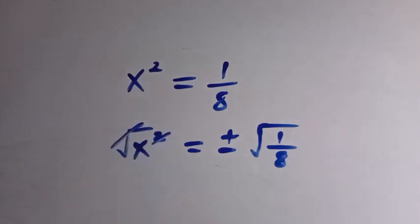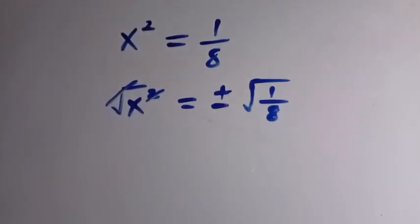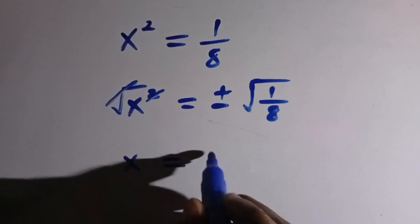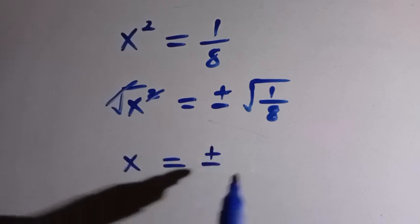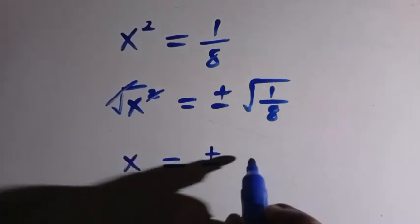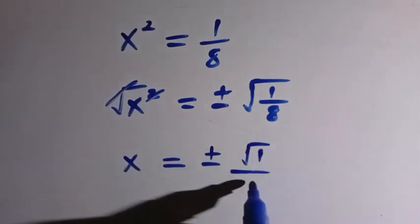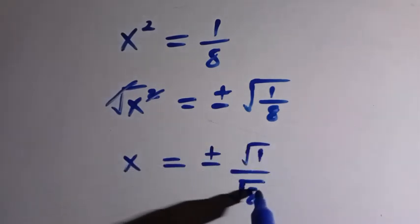So if this and this cancelled, we are going to have x equals plus or minus. So we have square root of 1 over 8 which we can separate as square root of 1 divided by square root of 8.